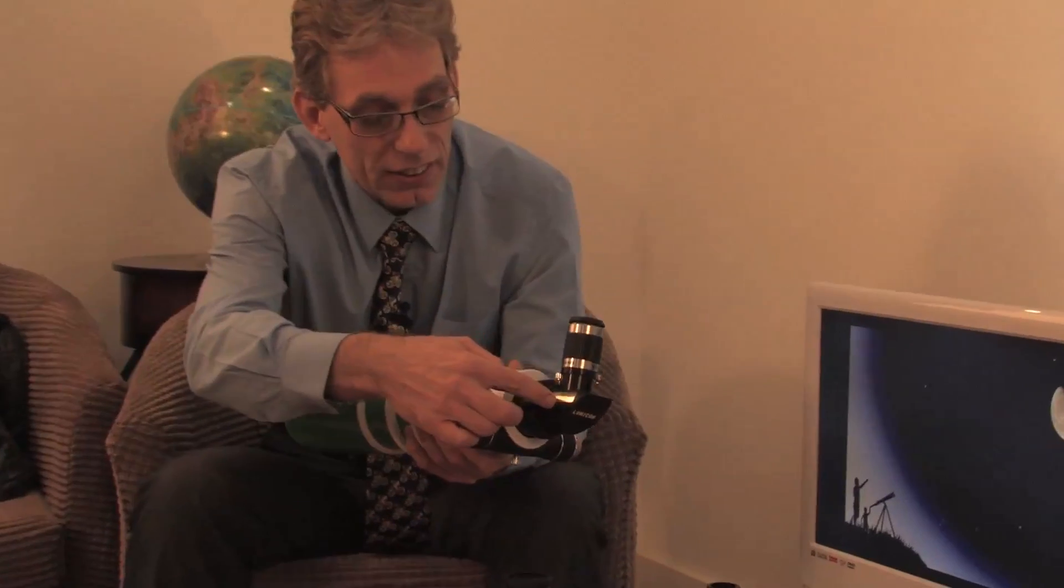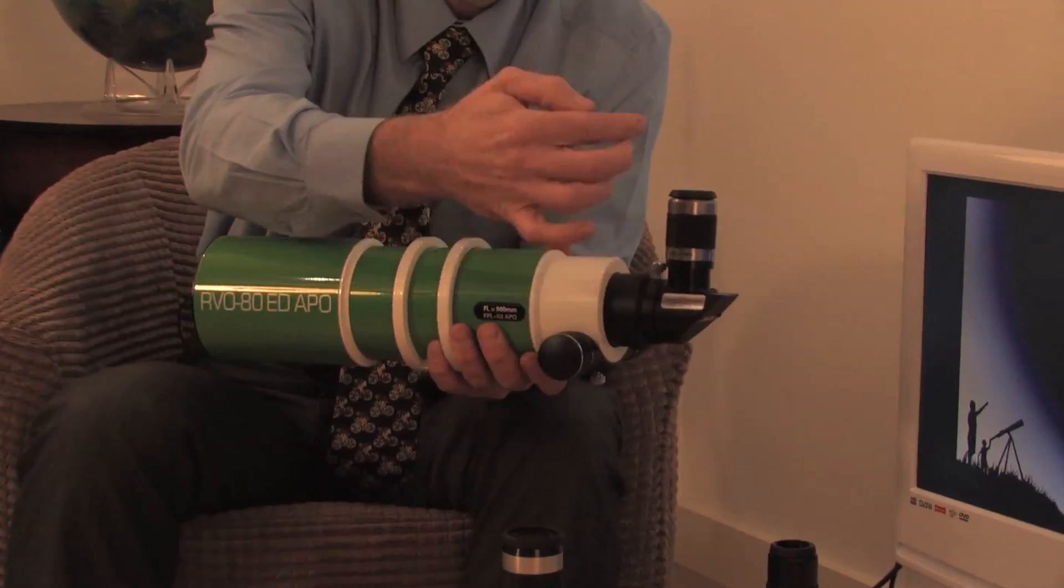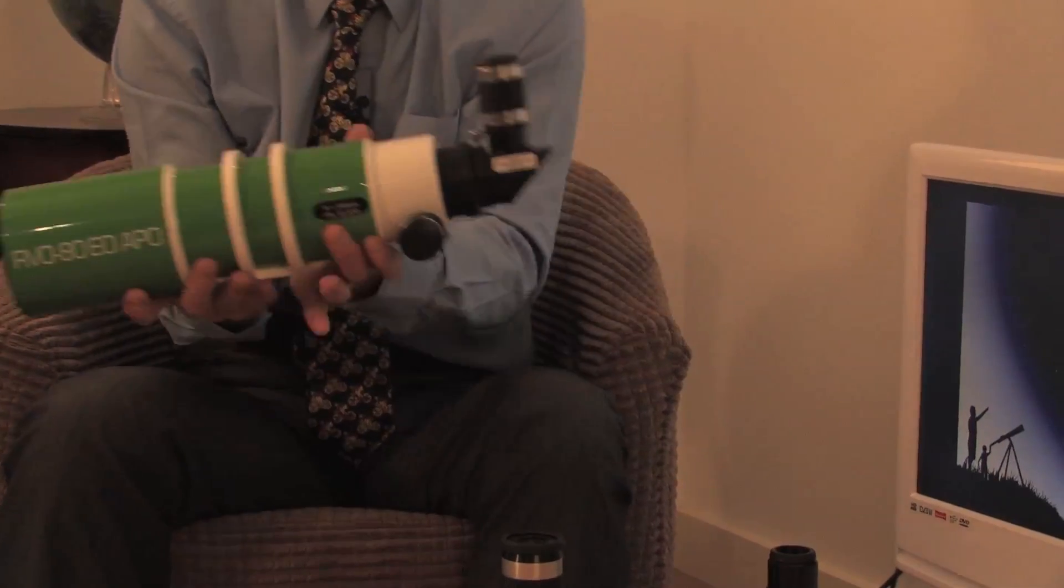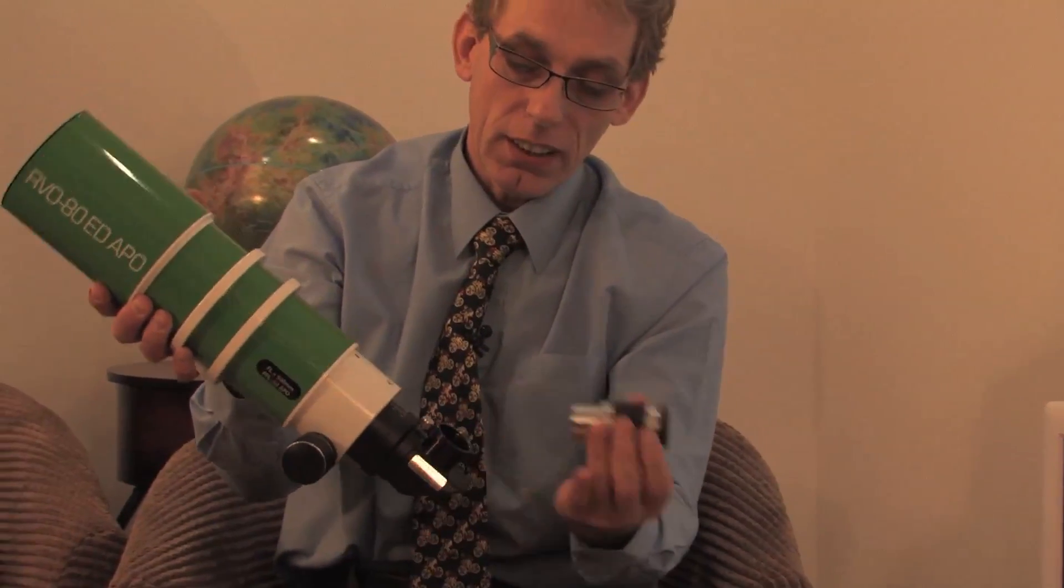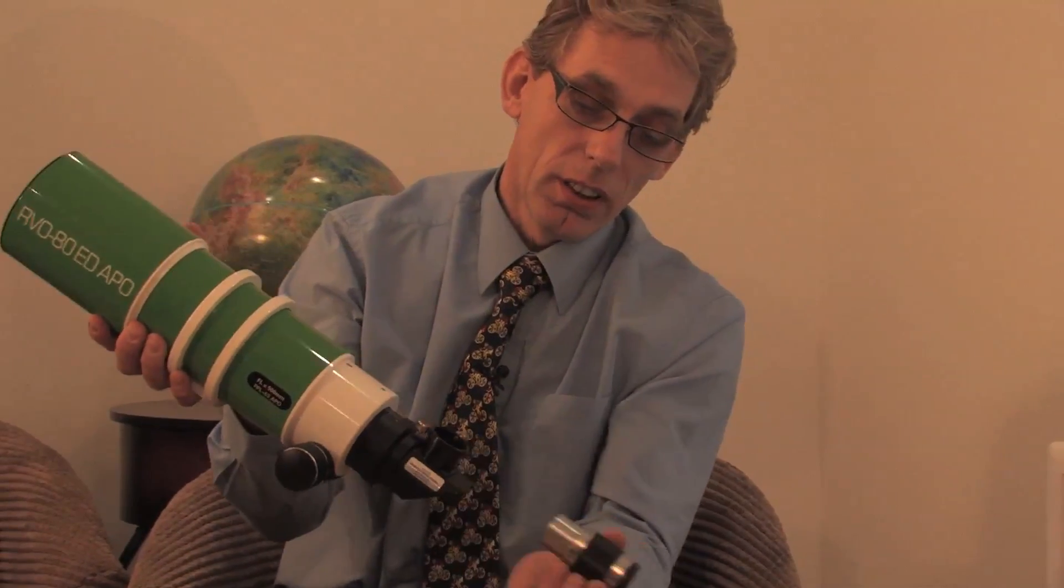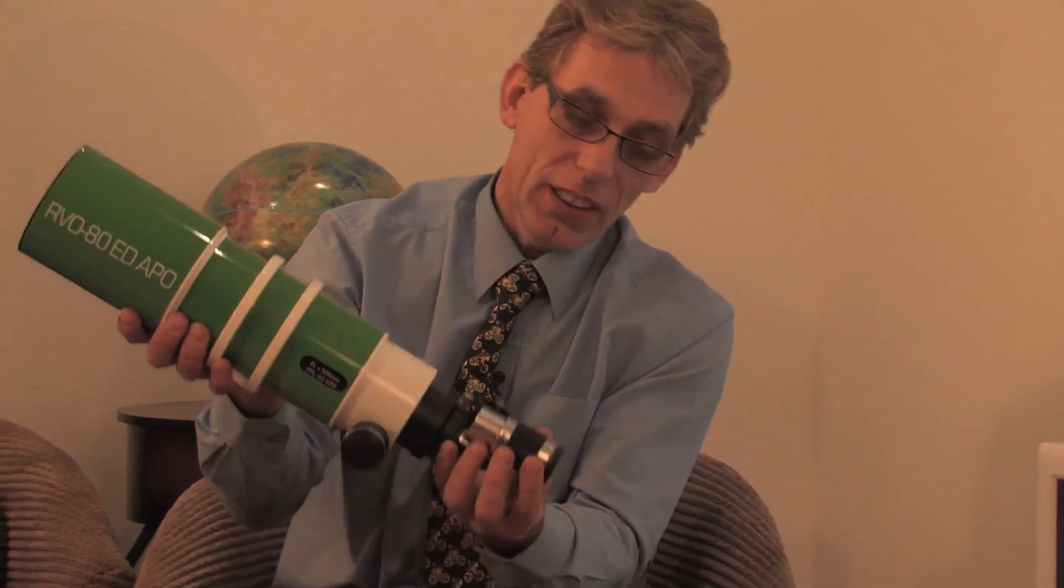And basically this is, this bit here is called a diagonal. And it comes up for comfortable viewing basically. So, you know, when you're at an angle like that, you can still get to the eyepiece properly. You can use them straight through at that sort of angle. But then you're crouching down.